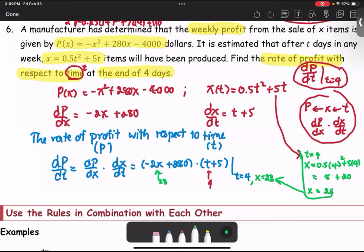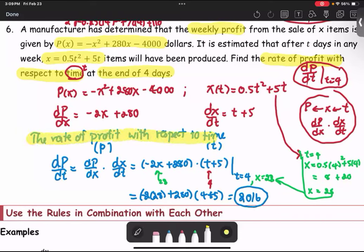Next, we're going to compute the number as negative 2 times 28 plus 280, times 4 plus 5. The number comes out to be 2,016. So here's the rate of profit with respect to time.